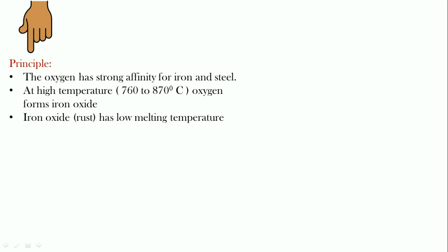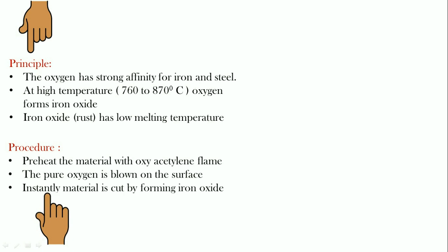Let's try to understand the procedure adopted for this. Initially the material is preheated with the help of an oxyacetylene flame, similar to the one used for welding purposes. Once the material reaches the red hot condition — that is, its temperature is around 760 to 870 degrees centigrade — pure oxygen is blown on the surface. At that instant, iron oxide forms, which results in the cutting action of the material.